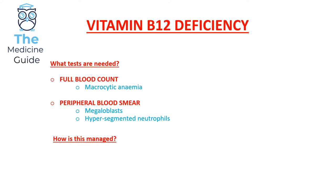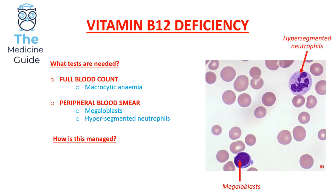Looking at the blood film, you can appreciate the example of the megaloblast in the bottom left-hand corner, and in the far right-hand corner at the top, you can see an example of a hypersegmented neutrophil. A hypersegmented neutrophil is when a neutrophil has more than five lobes present.